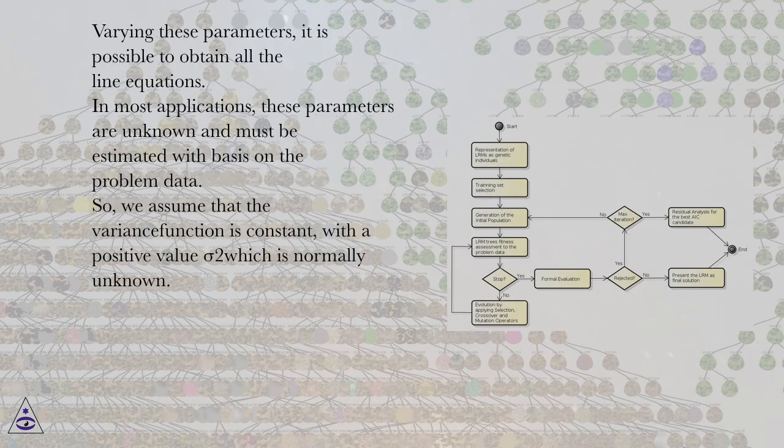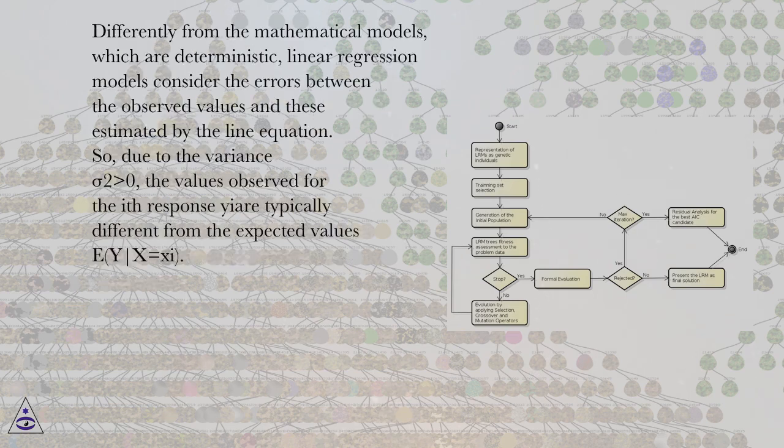Varying these parameters, it is possible to obtain all the line equations. In most applications, these parameters are unknown and must be estimated with basis on the problem data. So, we assume that the variance function is constant, with a positive value sigma squared which is normally unknown. Differently from the mathematical models, which are deterministic, linear regression models consider the errors between the observed values and these estimated by the line equation.